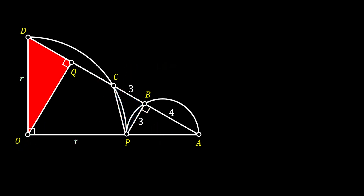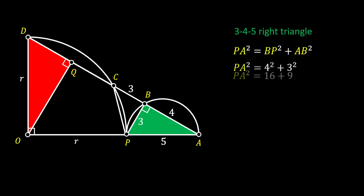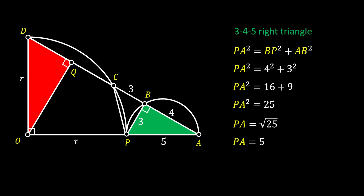That means the length of line PB is also equal to 3. Now let's set our attention to right triangle PBA. This is a classical 3-4-5 right triangle, so the hypotenuse PA must have the value of 5. If you are new to mathematics, you can pause the video and check how I got the value of PA using the Pythagorean theorem.